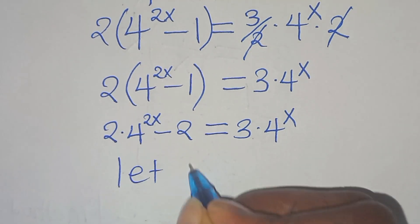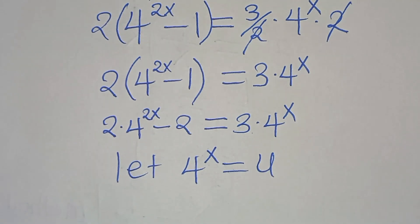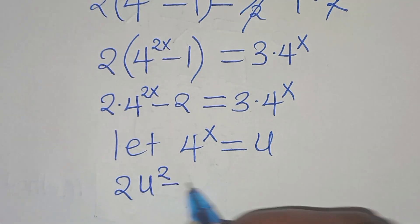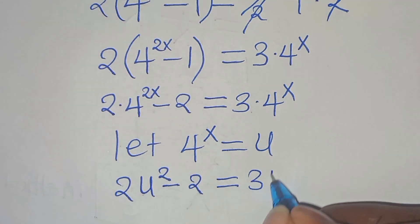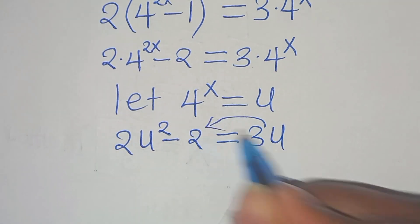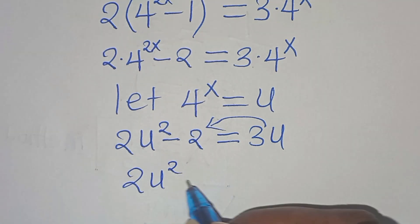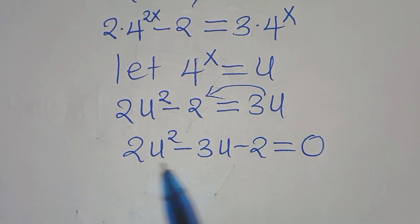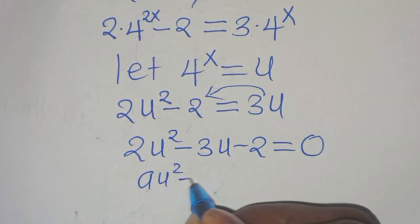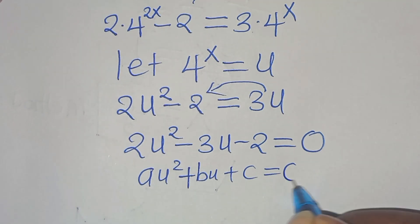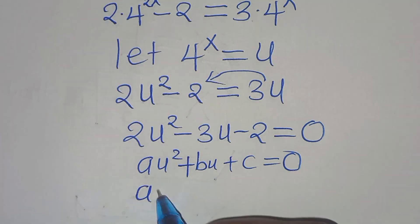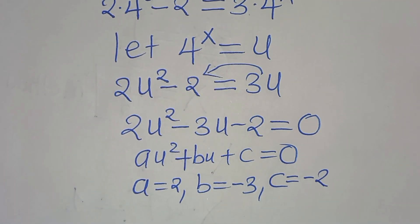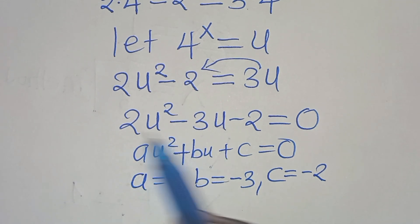Now we let 4 to the power of x be equal to u. Substituting u, we have 2u squared minus 2, equals 3u. Taking 3u to the left-hand side, we have 2u squared minus 3u minus 2, equals 0. This is a quadratic equation of the form au squared plus bu plus c equals 0, where a equals 2, b equals minus 3, and c equals minus 2. We can solve this by the factorization method.